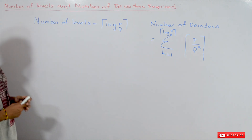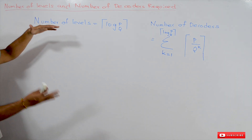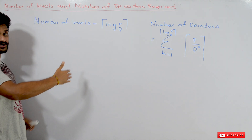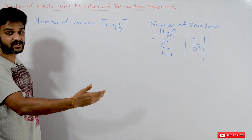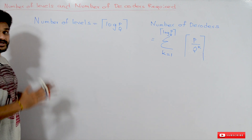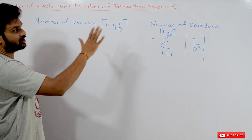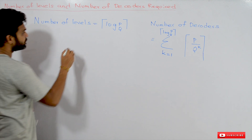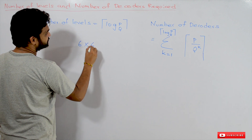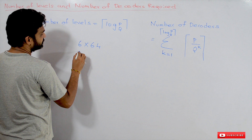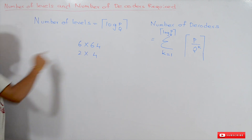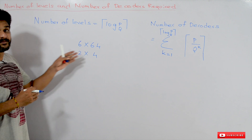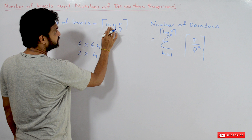Now, coming to this class — number of levels. Whenever we try to construct a bigger decoder using smaller decoders, there will be some levels of decoders. So how many levels are required to construct a given decoder using a smaller decoder, and how many decoders are required? For example, if you are asked to construct a 6 by 64 decoder using a 2 by 4 decoder, how do we find the number of levels?